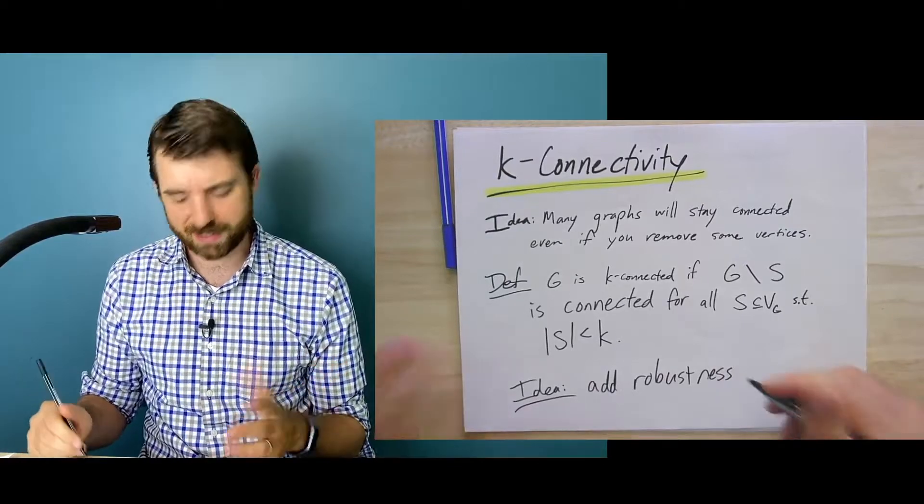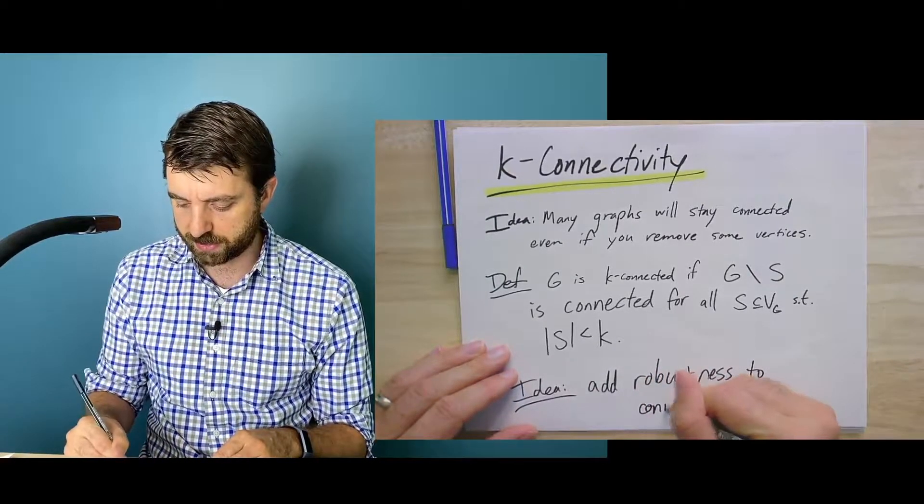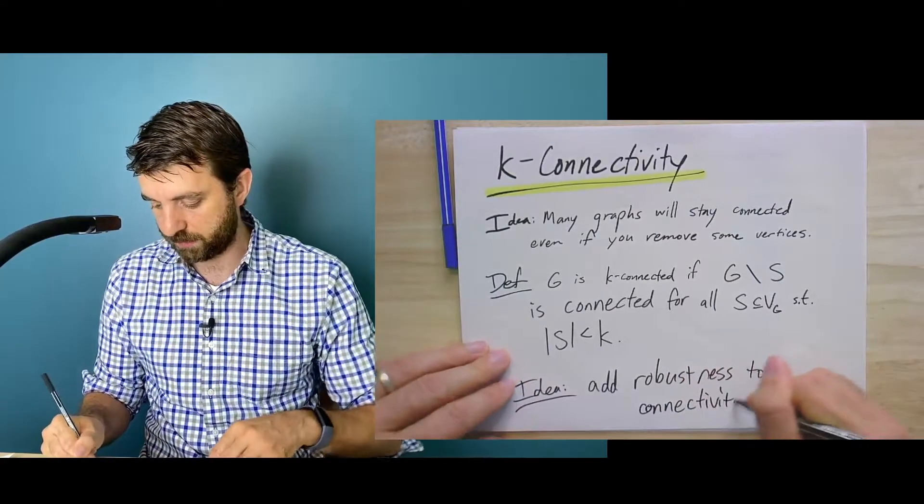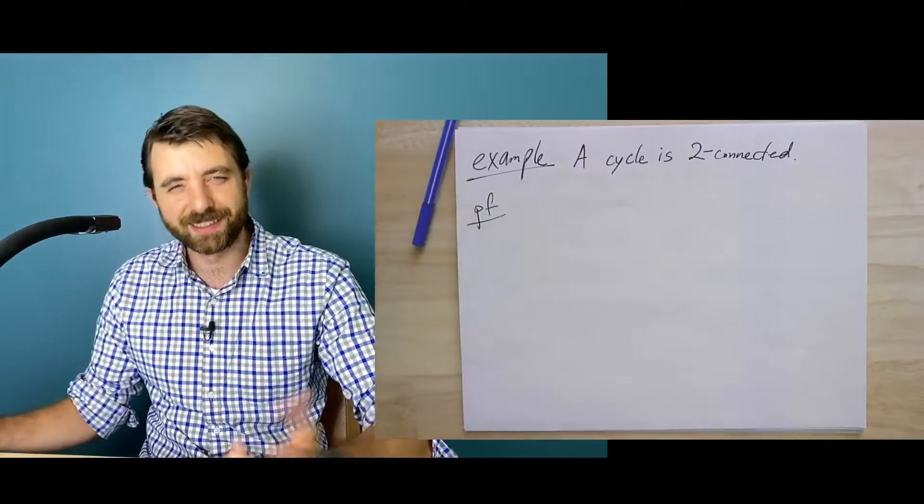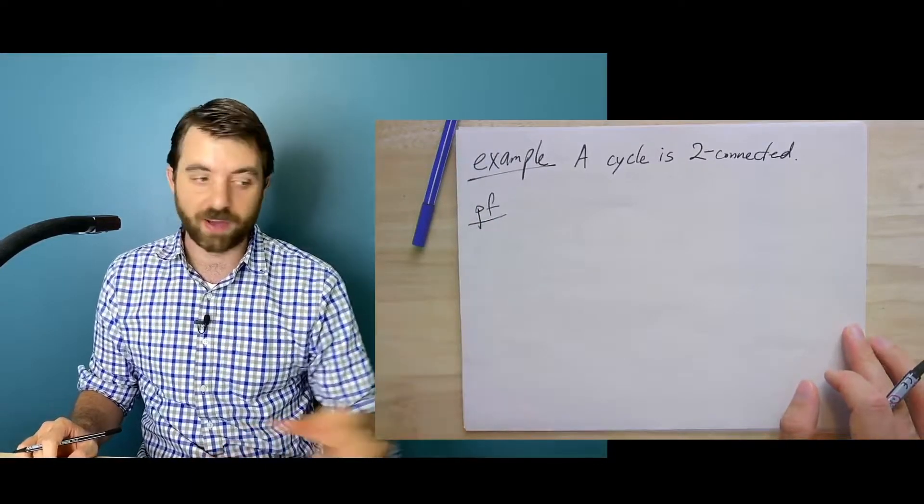We've seen some examples of graphs that are not just connected, but K-connected for different values of K. Maybe the simplest example, the most canonical example of a two-connected graph would be a cycle.